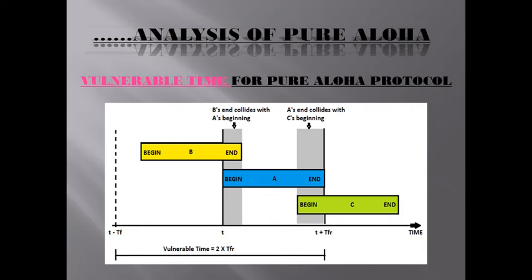Vulnerable time of Pure ALOHA: in the figure, station A is susceptible to collision from time t to t plus Tfr. If someone started transmitting earlier (within one Tfr before t), there is a risk of collision. If someone starts after time t, there are also chances of collision at the end. Therefore, from the beginning time A to the beginning time C, the total vulnerable window of 2×Tfr is called the vulnerable time.